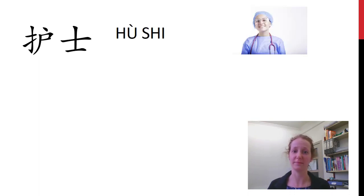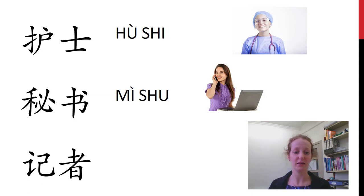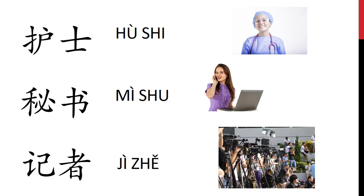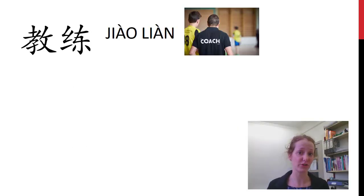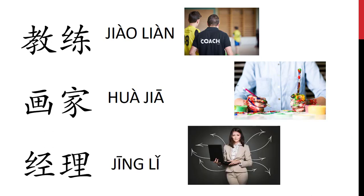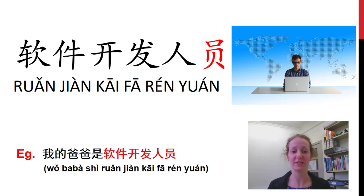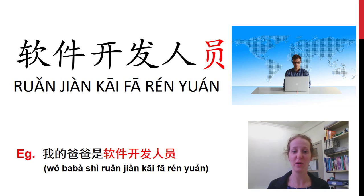第一个, 护士 — a nurse. 秘书 — secretary or administrator. 记者 — reporter or journalist. 教练 — a coach. A painter or artist. 经理 — a manager. Now here's a really long one — good luck. 软件开发人员. So this is a software developer. Let's try it all together: 软件开发人员. It's quite a mouthful, so good luck saying this one.